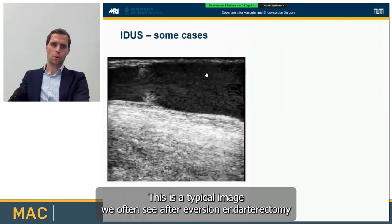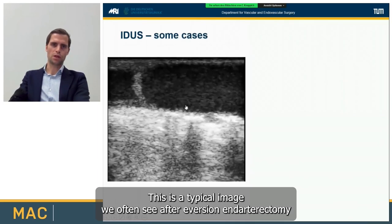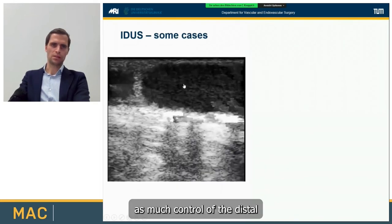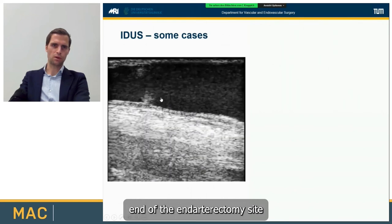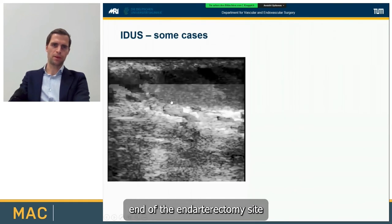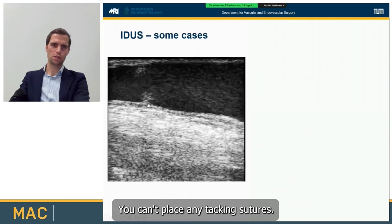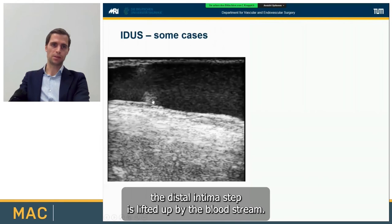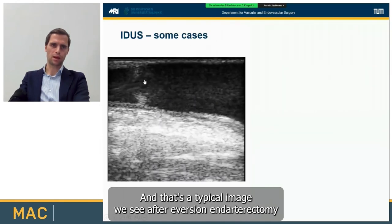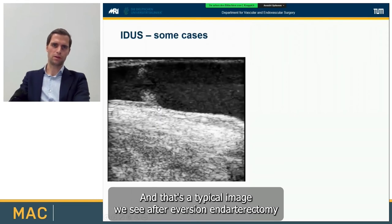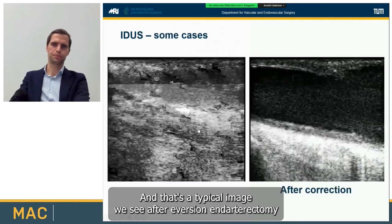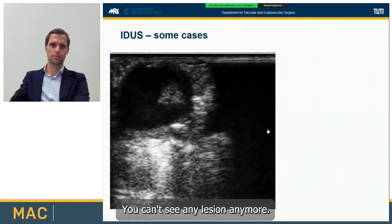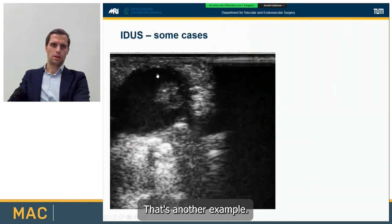This is a typical image we often see after eversion endarterectomy, because with that technique you don't have as much control of the distal end of the endarterectomy site and cannot place tacking sutures. It can happen that the distal intima step is lifted up by the bloodstream. After correction, you cannot see any lesion anymore.